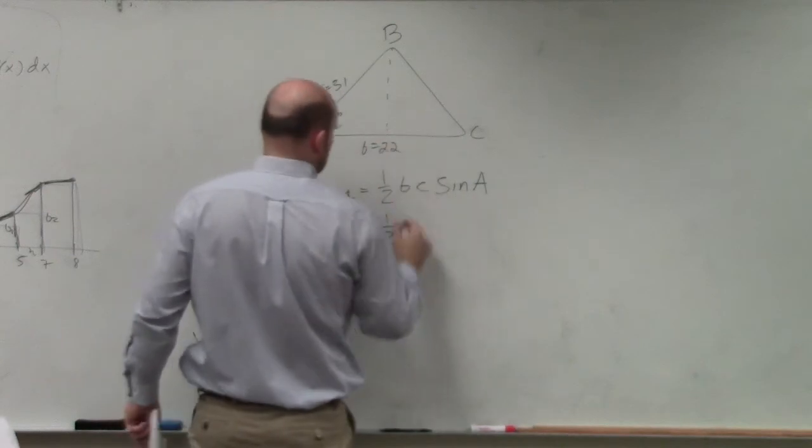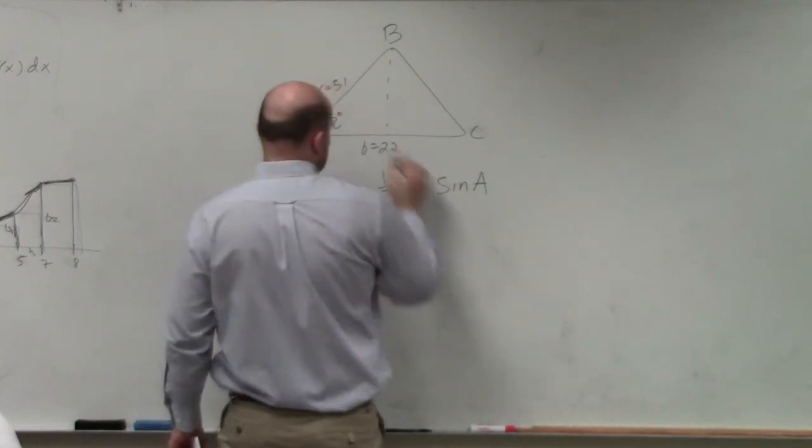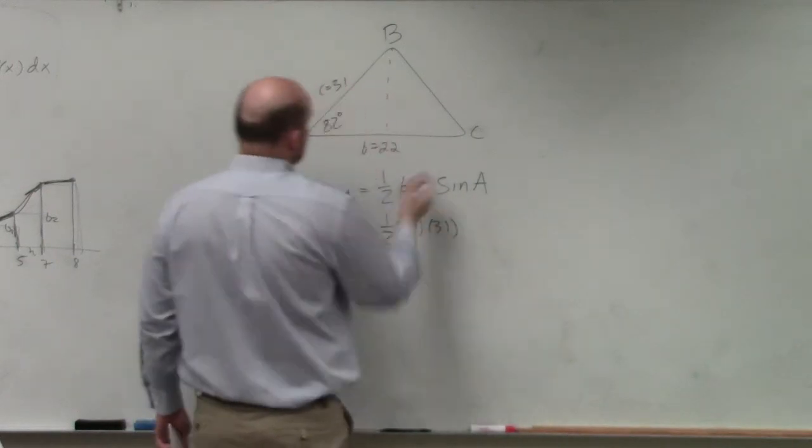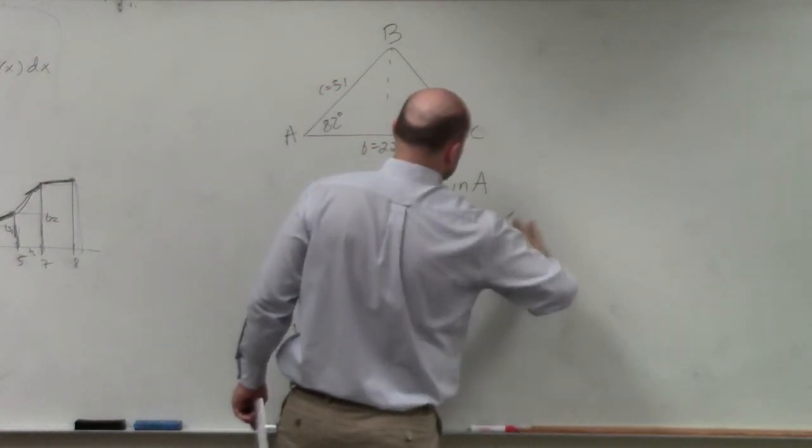So that's going to be one-half B, which is 22, times C, which is 31, times the sine of 82 degrees.